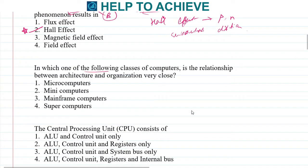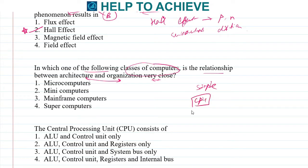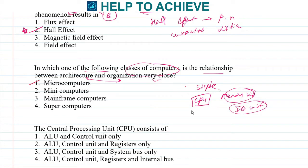Next: which class of computers has a close relationship between architecture and organization? A basic simple computer has a CPU, a memory unit, and an I/O unit, with a very simple architecture. These computers are also known as microcomputers, such as desktops and PCs. The correct answer is microcomputers, whereas mainframe and supercomputers have very complex architectures.